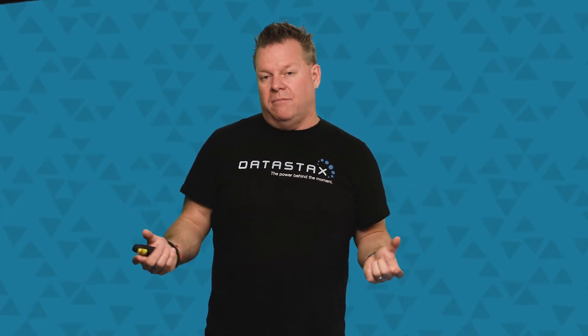There are a couple of concepts you need to understand. If an SS table is immutable, what do you do with that data as it comes in? When you do a snapshot, you're only going to see that point in time, so snapshots in between need to be maintained as well. When you need that data is when it's flushed from the mem table to disk — that's when it creates an SS table. At that point, if you're not running incremental, that data is now not backed up, so you have an incomplete set of your data.